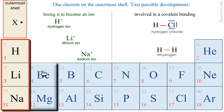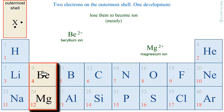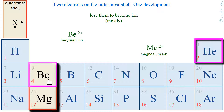What can happen to beryllium or magnesium to have the same electronic structure as the nearest rare gas? Beryllium loses 2 electrons — the 2 electrons of the outermost shell — and magnesium too. So beryllium will have the same electronic structure as helium, and magnesium will have the same electronic structure as neon.